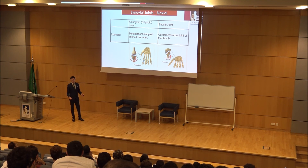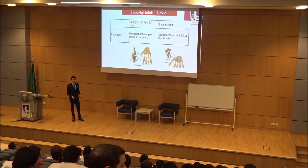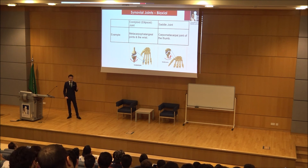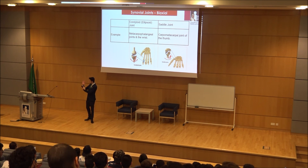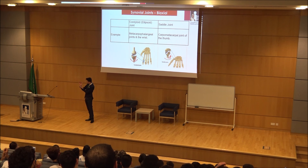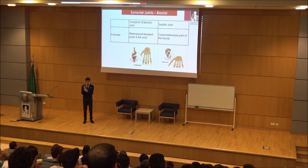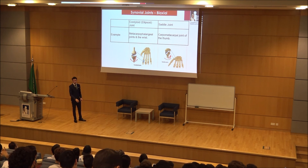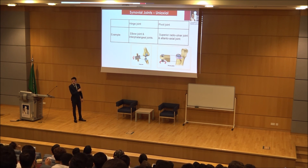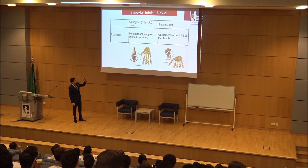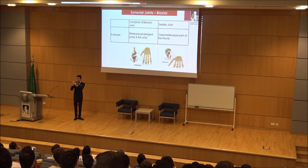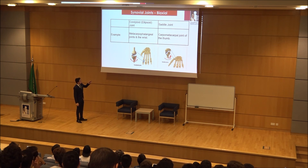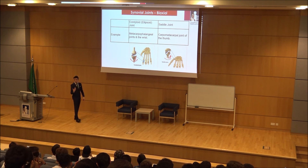Biaxial joints: condyloid/ellipsoid and saddle. The saddle joint has only one example in the entire body: the carpometacarpal joint of the thumb — between the carpals and metacarpals at the thumb. The condyloid or ellipsoid example is the metacarpophalangeal joint (MCP) — between the metacarpal and the phalange. You can also abbreviate the interphalangeal joint as IP.